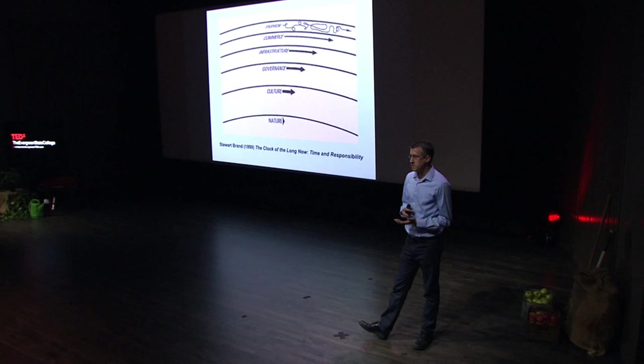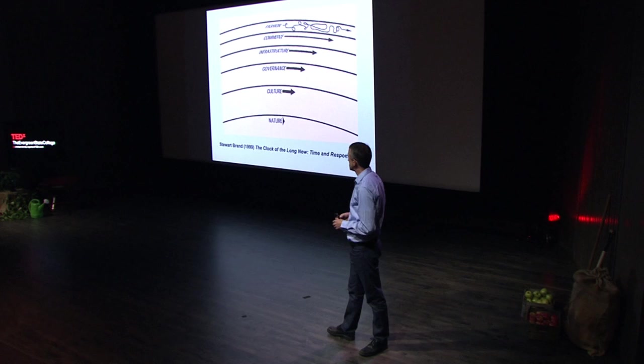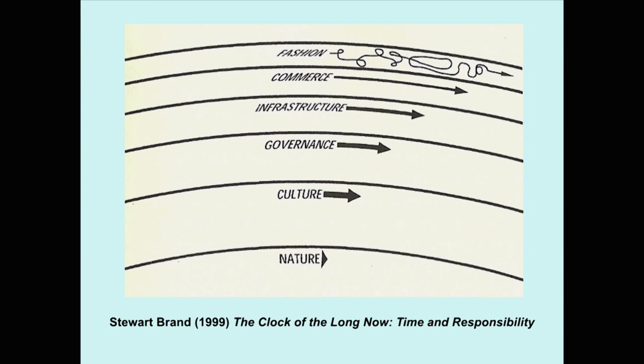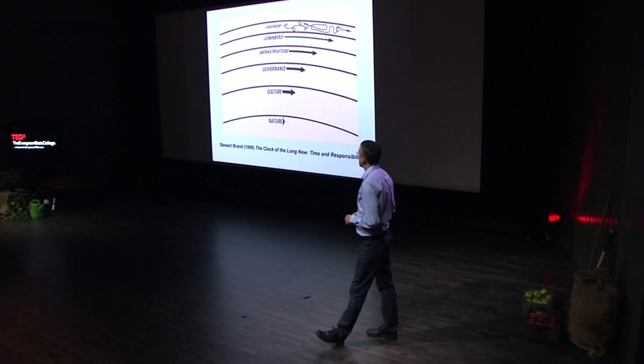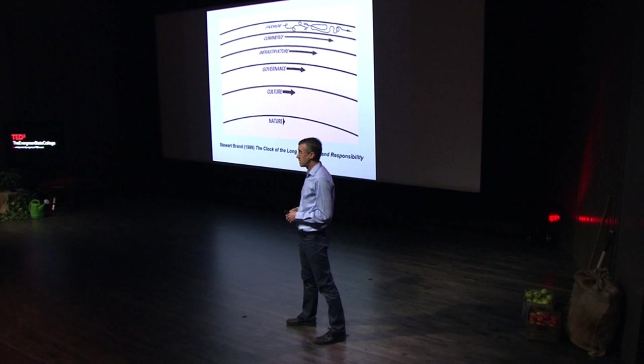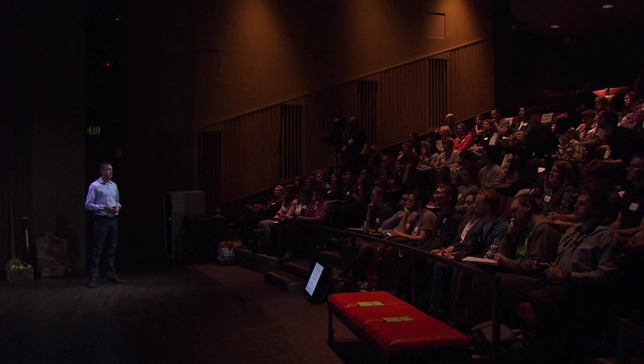The thing I want to emphasize is that not everything moves at this accelerated pace. This is a point that Stewart Brand made in a book called The Clock of the Long Now, and he illustrates it in this diagram. Brand points out that there are certain things, like fashion or who's trending on Google right now, that change rapidly. There are other things, like infrastructure or governance processes, that change more slowly. And there are certain things, like many processes in nature, that happen very slowly.